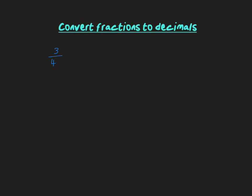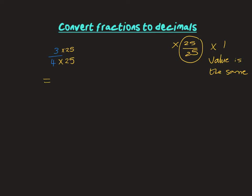What could we multiply 4 by to get ten? We can't — multiplying by 2 gives 8, by 3 gives 12. So what could we multiply 4 by to get to one hundred? We could multiply by 25. But in maths we can't just multiply the bottom randomly — we've got to do the same to top and bottom. That's equivalent to multiplying by 25/25, and anything over itself is 1.